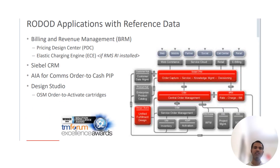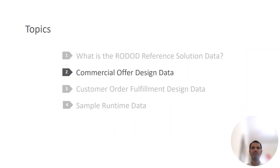Next, we'll see the Road Art application with reference data: BRM for Billing and Revenue Management, principles provided with PDC (Principal Design Center), and ECE. These are the Road Art applications in CRM — SIEBEL CRM — AIA for order-to-cash PIPs, Design Studio as a product design studio, and OSM with an orchestration catalog. These are the topics discussed in order performance reference data. The second part covers commercial offering design data, which we'll go through in the next part-two video.